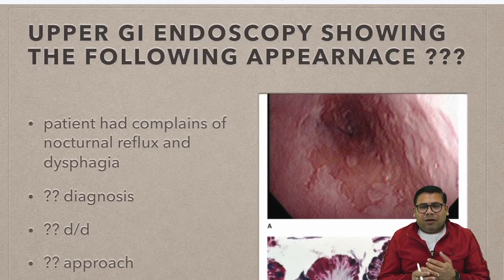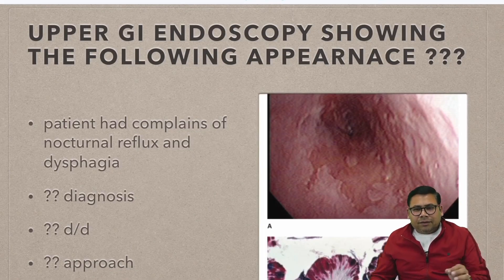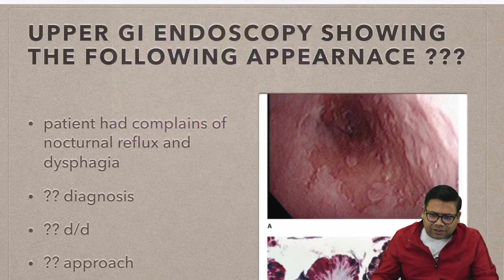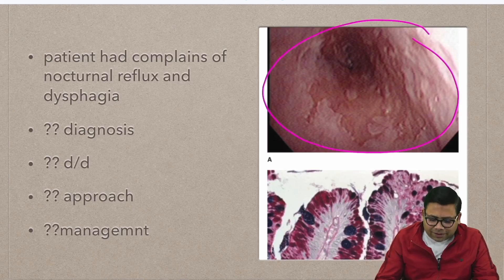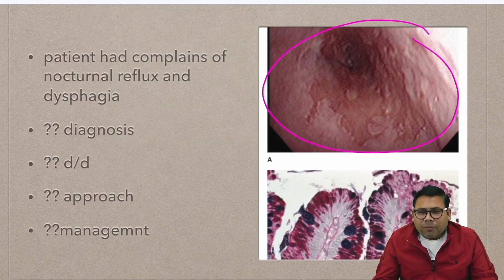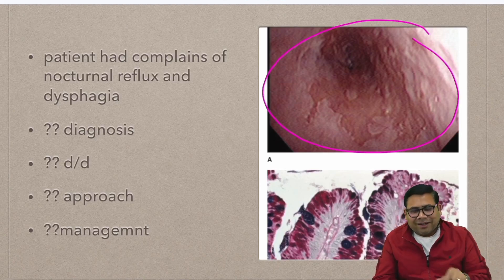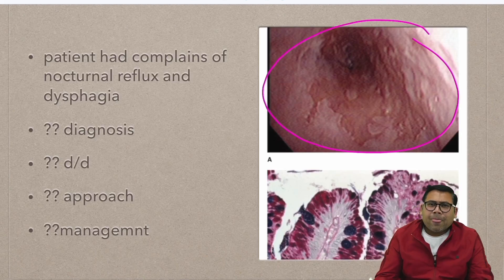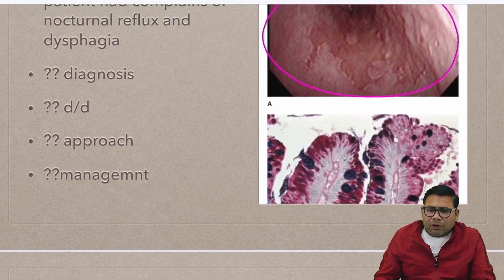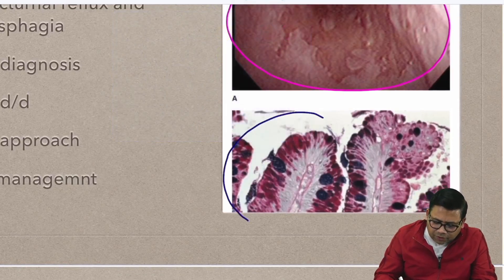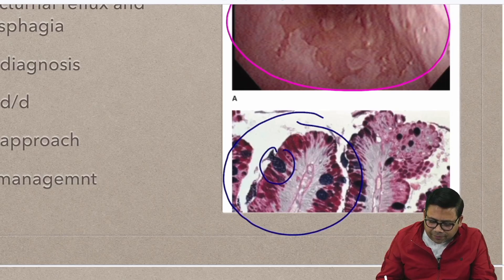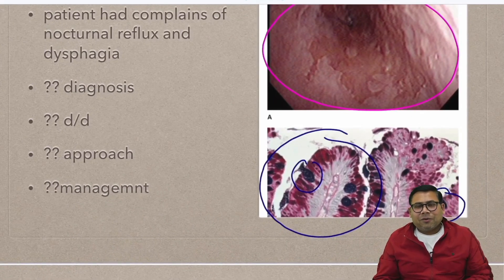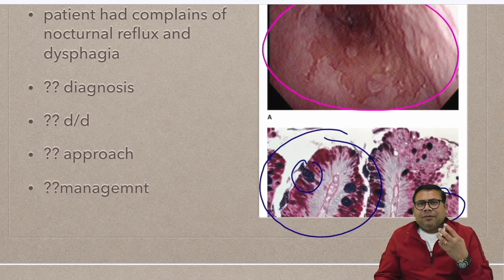Let me show you one picture. This is an image of an upper GI endoscopy showing the esophagus — a classical picture. You can confidently say this is esophagitis, and yes, there is abrasion all over the esophagus. When you see a lot of abrasions and esophagitis, you take a biopsy, and on biopsy you see something very particular: goblet-shaped cells. So the diagnosis is classic Barrett's disease.